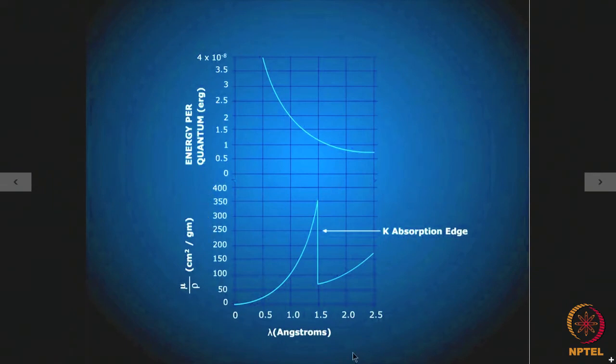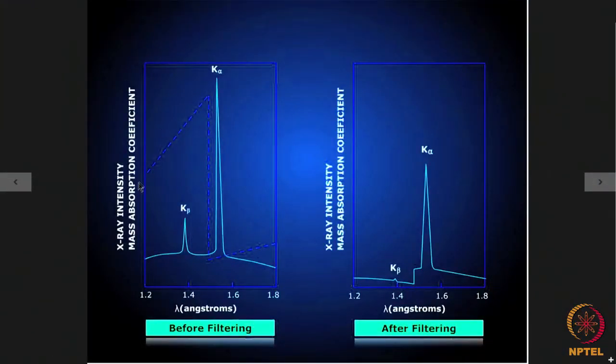Here we have superimposed the mu by rho versus lambda plot for nickel on top of the radiation coming out from a copper target. What we find here? We find that mu by rho, that means the mass absorption coefficient of nickel, is very high for any wavelength less than the K-alpha wavelength. At every point the mass absorption coefficient is very very high. On the other hand, when it comes to the K-alpha radiation, the mu by rho value is very low. And again for other wavelengths on the right-hand side, the mu by rho value increases.